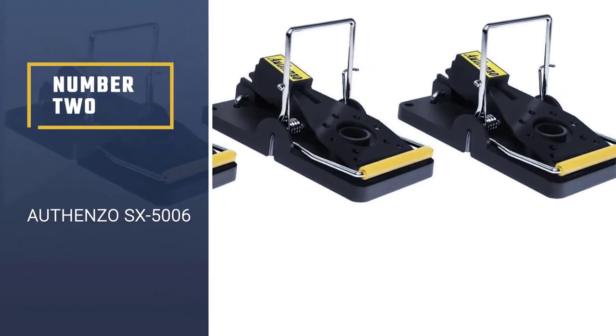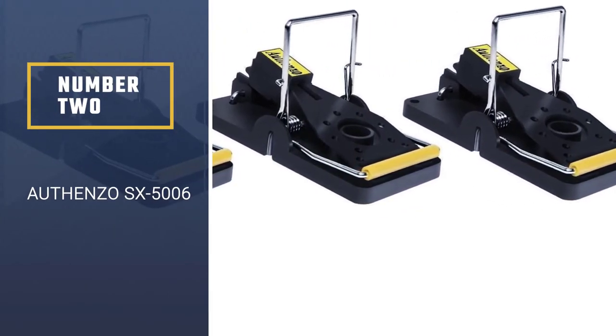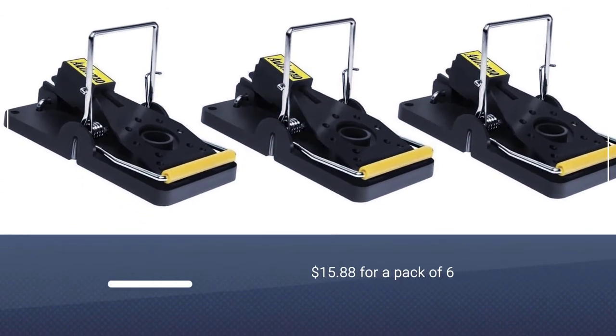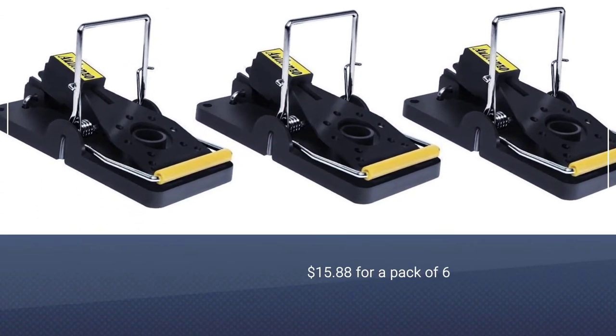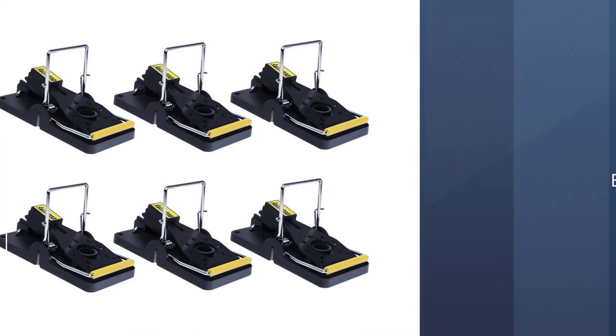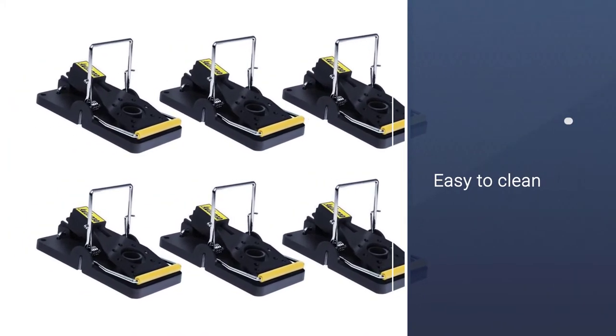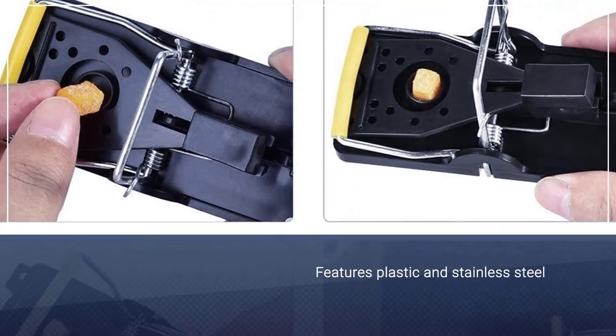Number 2: Othenso SX5006. In addition to producing mouse traps, Othenso also makes traps for other wild animals, including moles and rabbits. These mouse traps are easy to set, inexpensive, and effective.